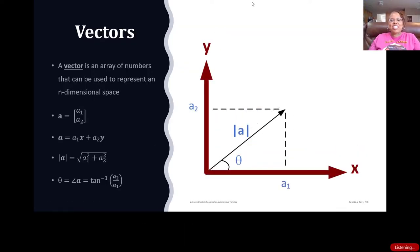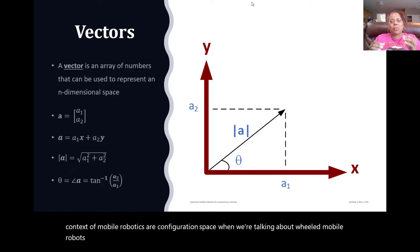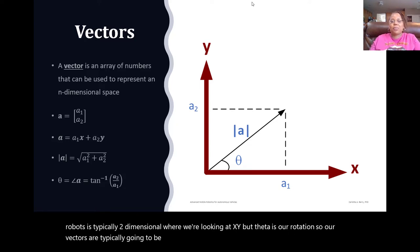A vector is an array of numbers that is used to describe an n-dimensional space. In the context of mobile robotics, our configuration space when we're talking about wheeled mobile robots is typically two-dimensional where we're looking at x, y, but theta is our rotation. So our vectors are typically going to be x, y, theta, which represents the position and rotation of a mobile robot within a global reference frame.